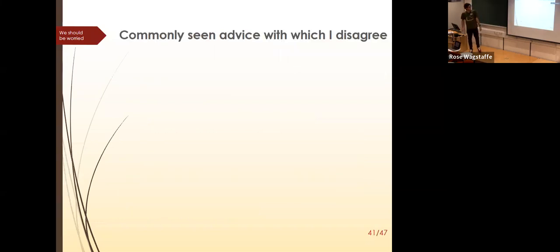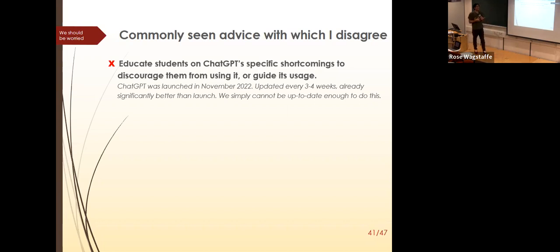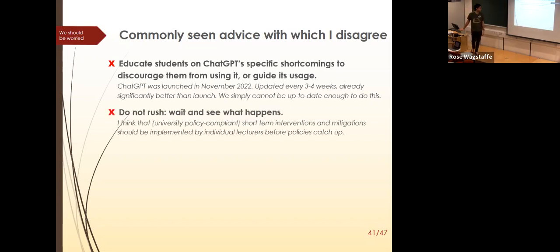Commonly seen advice with which I disagree. First: educating students on ChatGPT's specific shortcomings to discourage use — for instance, 'it's terrible at references, so don't use it for your project.' All this does is: when ChatGPT becomes good at references in a few months, students say 'problem solved.' We should focus on why not to use AI because it's AI, not because it's currently bad at something. This is three months old, already upgraded three times, and we'd need to update our approach every few weeks.